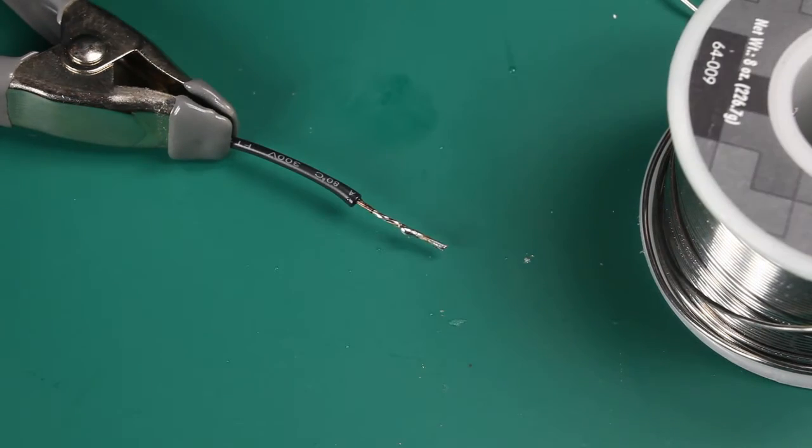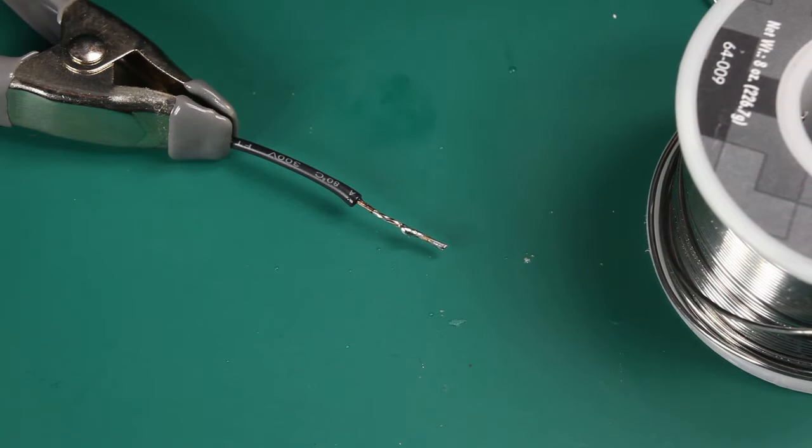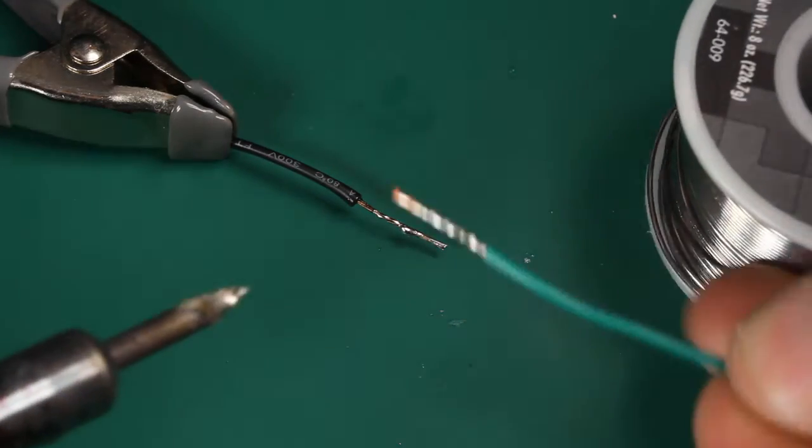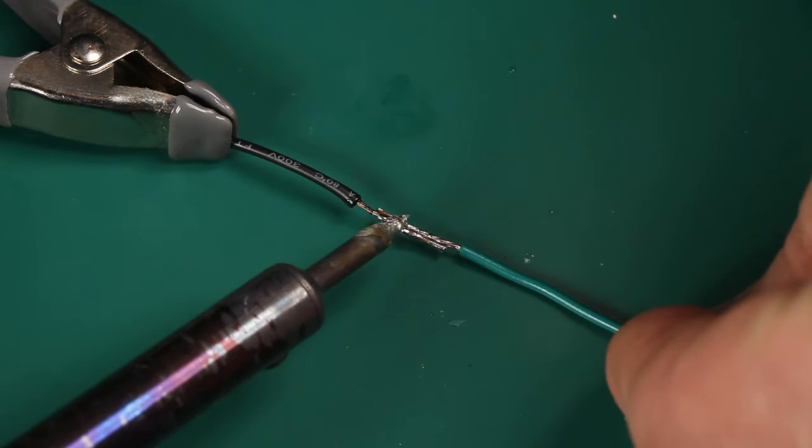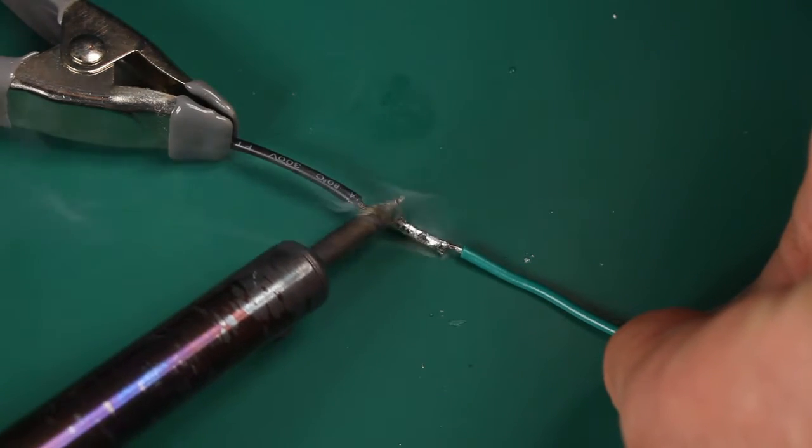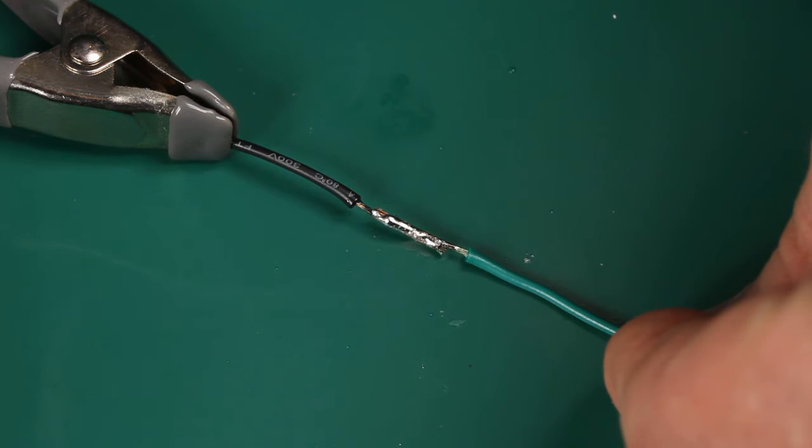So if we want to take another wire and attach it to this one, we'll go ahead and tin it. Bring it down and all you have to do after you tin them is to stick them together, run the iron along the length, and there you go.